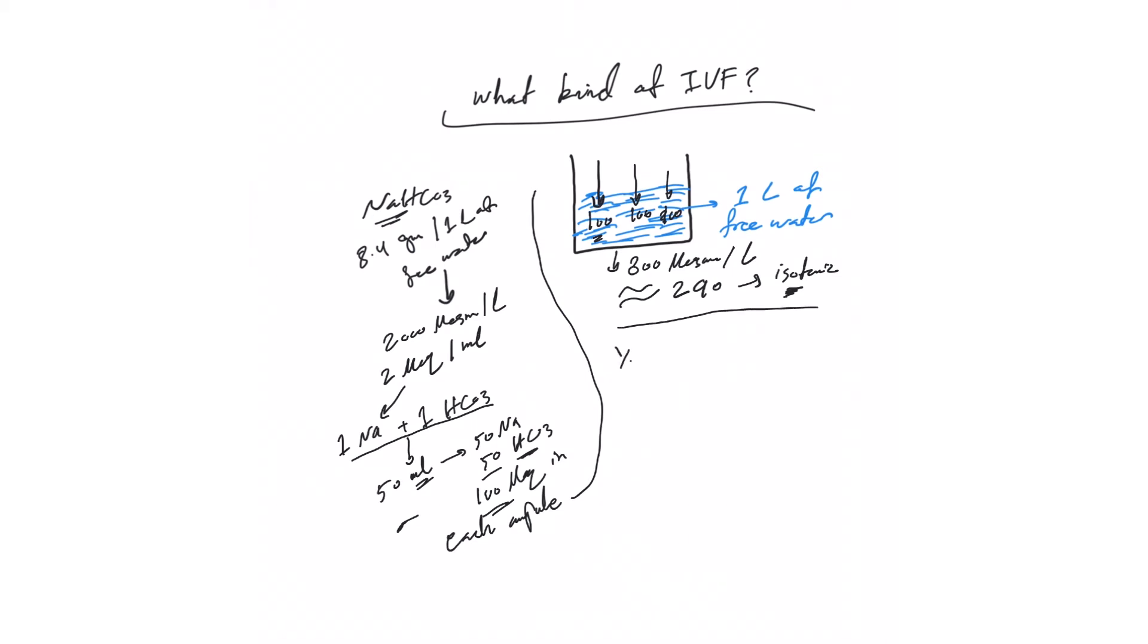We could also do a different mixture. We can have a half normal saline, which has 154 milli equivalent or milli osmol per liter. Simply to make it similar to 300, you need to add another 150. That will be plus 1.5 ampoules of sodium bicarb, because each ampoule has 100. 1.5 has 150, you add it to 154, that will be 304. So this is an isotonic solution, another way to mix bicarb.